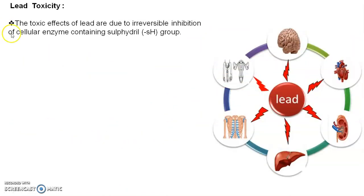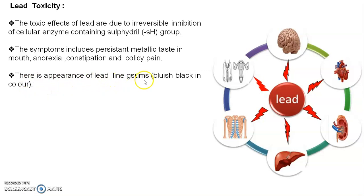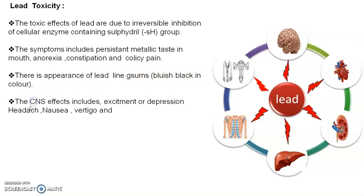The toxic effects of lead are due to the irreversible inhibition of cellular enzymes containing the sulfhydryl (SH) group. Symptoms include a persistent metallic taste in the mouth, anorexia (the patient has no appetite and does not want to eat), constipation, colic pain, and appearance of a bluish-black lead line in the gums. Central nervous system effects include excitement or depression, headache, nausea, and vertigo.